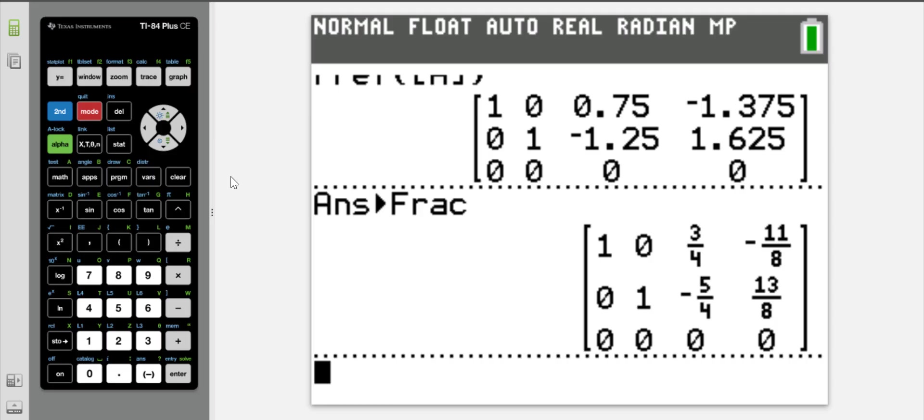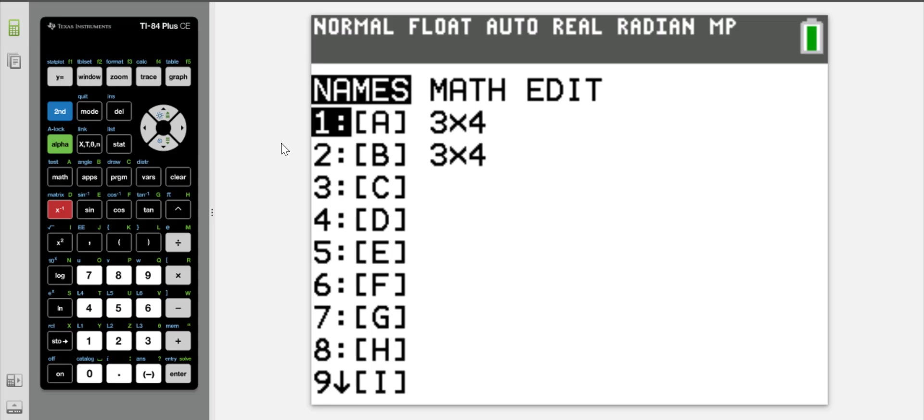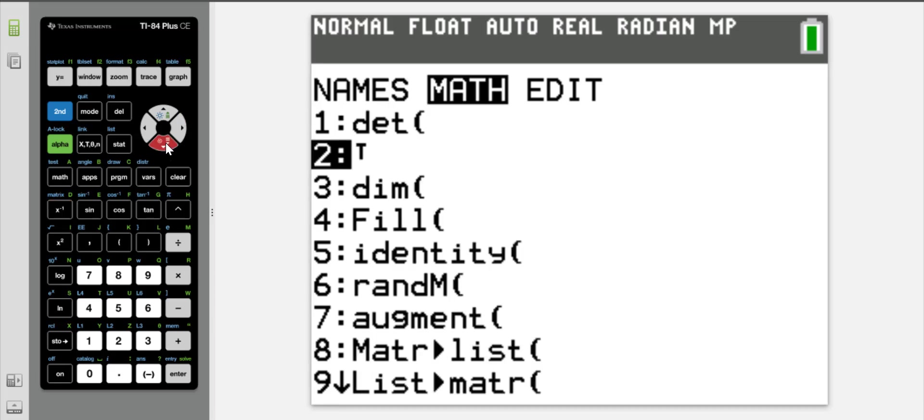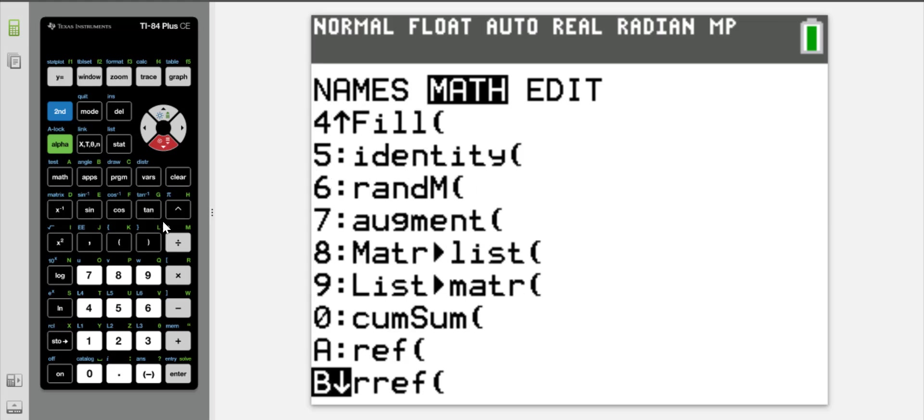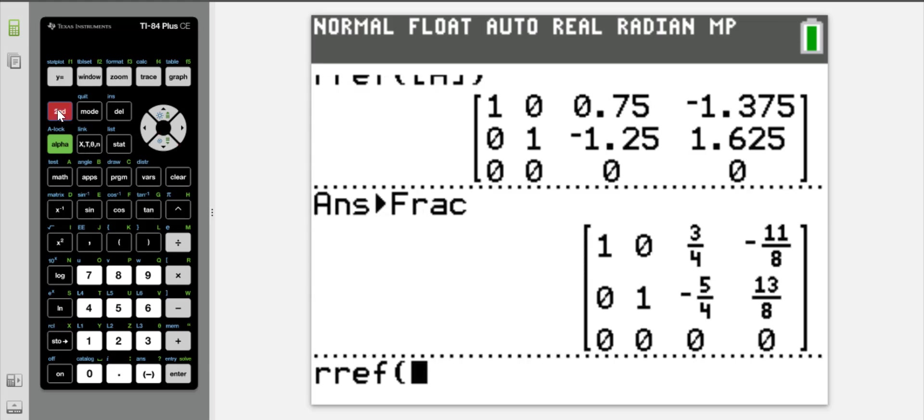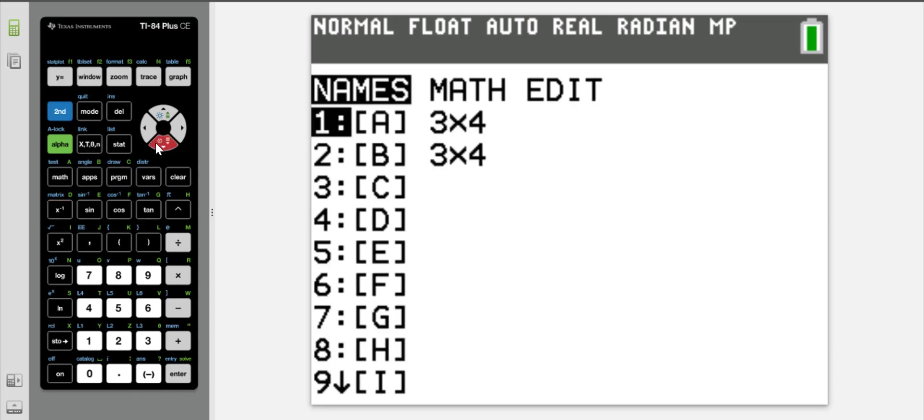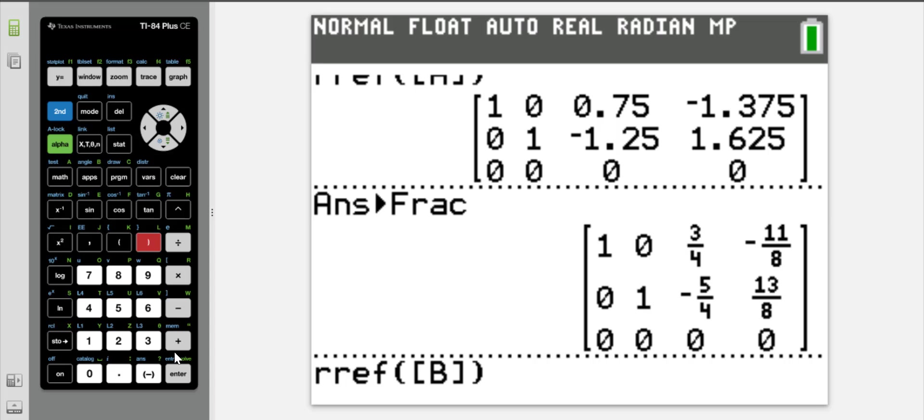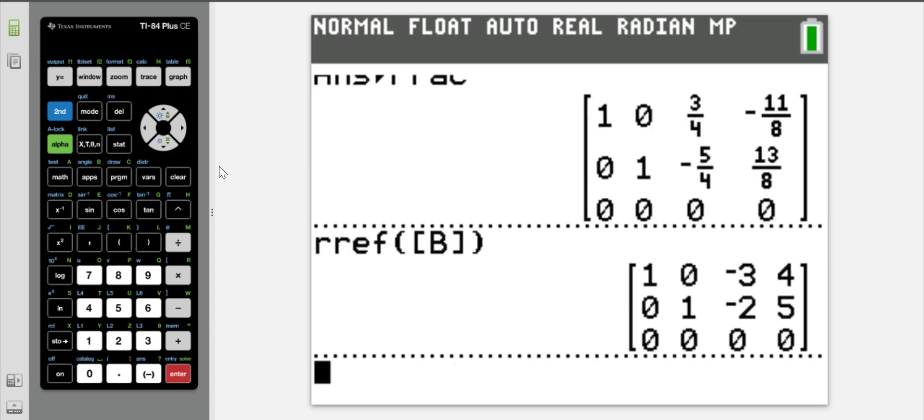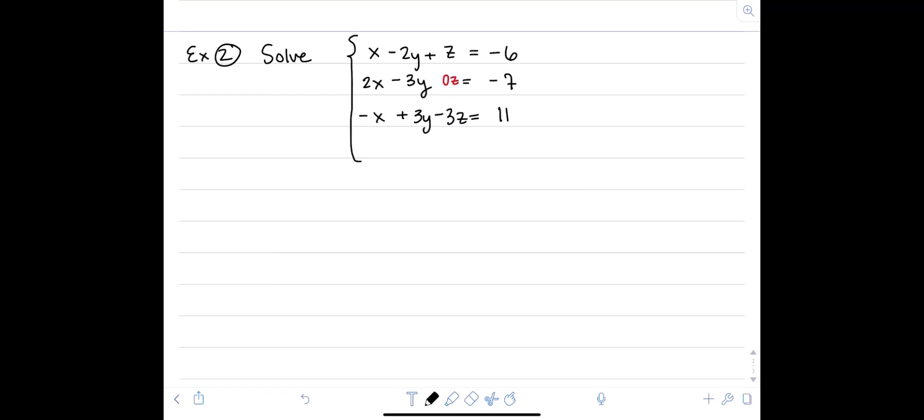We'll jump on over to the calculator. For this matrix, I've already taken the liberty of entering the matrix into the matrix menu. So let's just get the reduced row echelon form on it. Going to the matrix menu, tabbing over to math, scrolling down to reduced row echelon form. And what matrix are we going to do that on? We'll do that on matrix B. And it looks like our reduced row echelon form is 1, 0, negative 3, 4, 0, 1, negative 2, 5, and our row of all zeros.